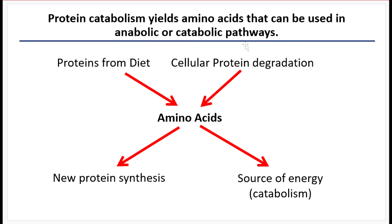Both lysosomal degradation and proteasomal degradation will degrade cellular proteins and proteins consumed as part of your diet into amino acids. Those amino acids can then be used to build new proteins — enzymes, receptors, hormones, muscle tissue. During times of starvation, or when you have an excess of amino acids where you've built all your new proteins but still have extra, the remaining amino acids will be catabolized and oxidized in order to create ATP.